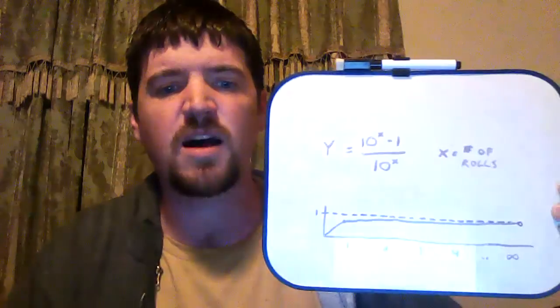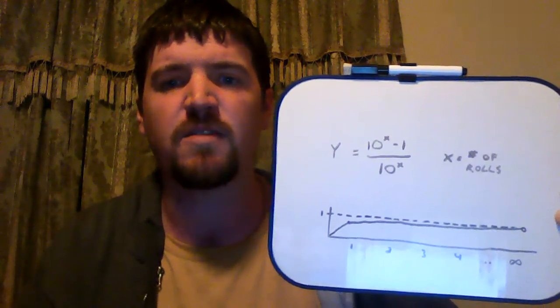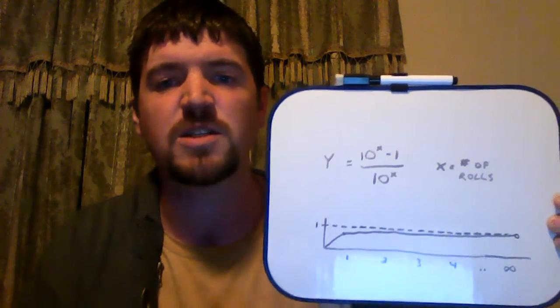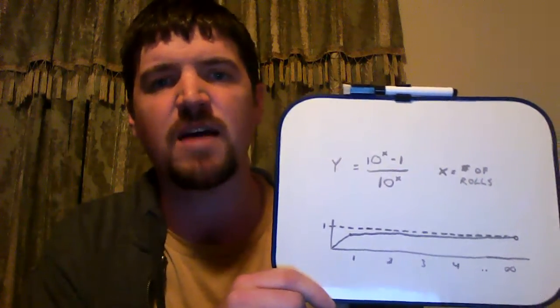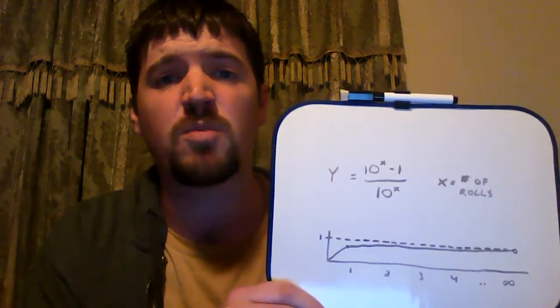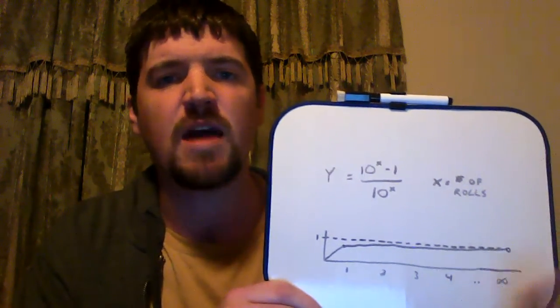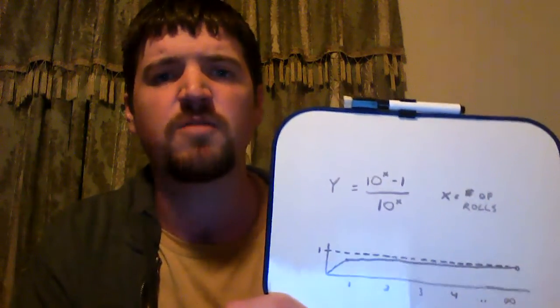How do we know the percent chance for all the finite rolls? You can graph it — a very accepted method of inductive reasoning. We don't plot every point; we plot enough to see the general pattern and how it extends infinitely, because lines are infinite.